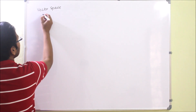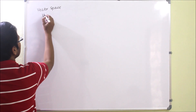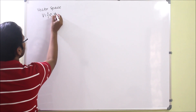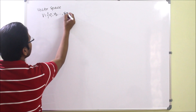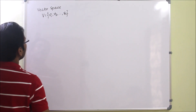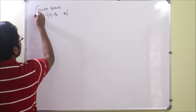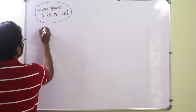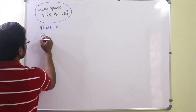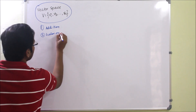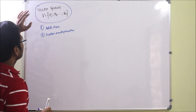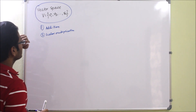A vector space is nothing but a set of vectors, denoted as capital V. We can write it as V1, V2, and so on, Vn. If this set obeys 8 properties — the first 4 being vector addition and the last 4 being scalar multiplication — then that set V is called a vector space.